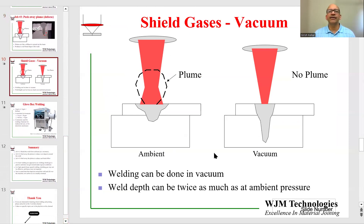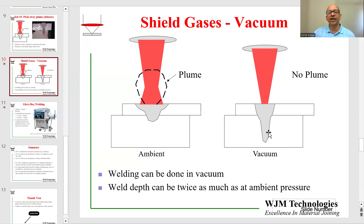Researchers have done studies making laser welds in a vacuum. When you do a laser weld in a vacuum, whatever plume is forming is very quickly sucked away, so there is effectively no plume. They found that with the same energy, when the weld is done in a vacuum the depth of the weld is almost twice — so it is a very efficient way of making a deeper weld. A vacuum environment is not very difficult to achieve, since a lot of electron beam welding is already done in a vacuum, and it would not be terribly difficult to adapt an electron beam chamber for laser welding.